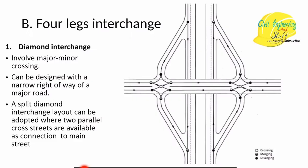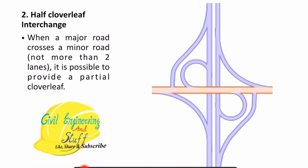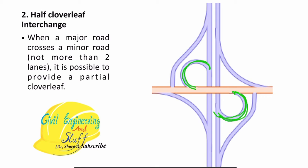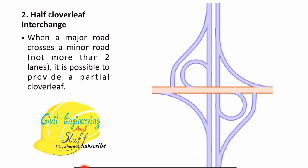This is your diamond interchange — movement of traffic can be arranged as per requirement. Then we have the half-cloverleaf interchange. A full cloverleaf has four loop sections; when we use two loop sections along with four-leg interchange subsidies, that represents the half-cloverleaf. When we have two loop sections along with the four interchanges, it is called a half-cloverleaf interchange.